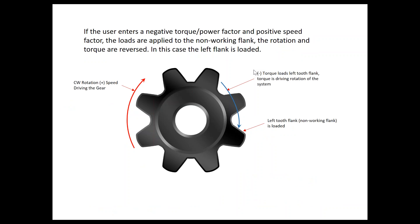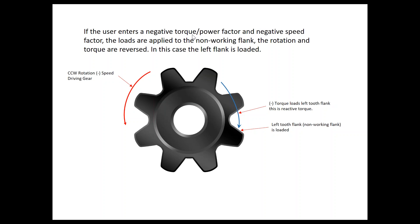If we enter a negative torque and a positive speed, the loads are applied on the non-working flank. The speed and torque are essentially in the same rotation direction; however, the speed is holding the gear constant at some RPM and the torque is driving the rotation of the system, loading the non-working flank. If you have a negative torque and a negative speed, the loads are also applied to the non-working flank — the left flank is loaded. Here you have counterclockwise rotation and negative torque, so the speed is driving the system and the torque is reactive on the left flank.